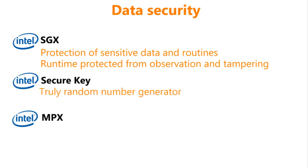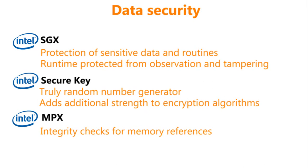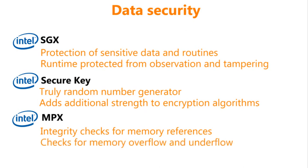Intel Secure Key consists of a digital random number generator that creates truly random numbers to help strengthen encryption algorithms. Intel MPX, or Intel Memory Protection Extensions, provides a set of hardware features that can be used by software in conjunction with compiler changes. This helps to check that memory references intended at compile time do not become unsafe at runtime due to buffer overflow or underflow.